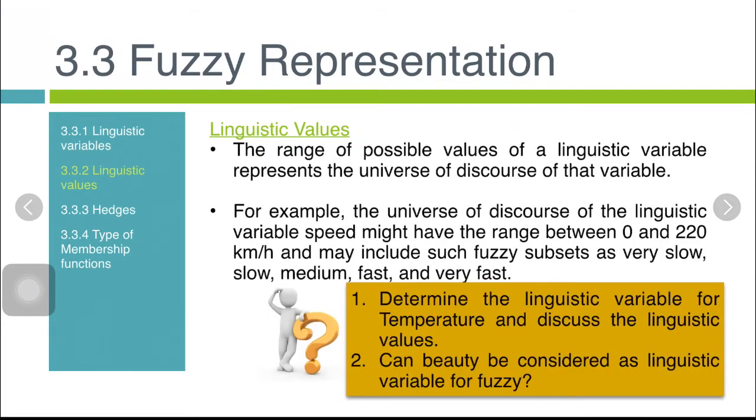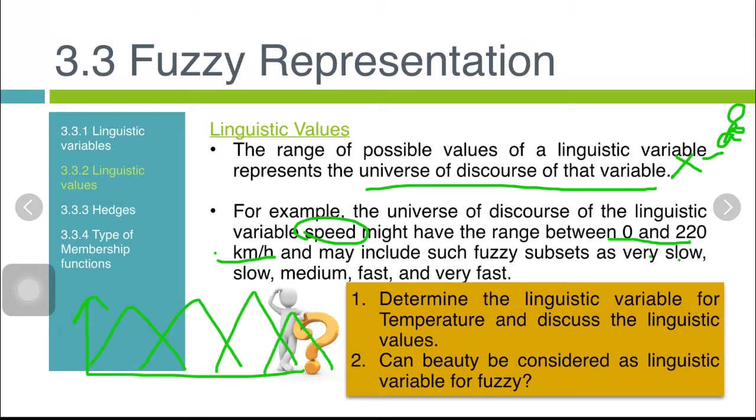The range of possible values of linguistic variables represents the universe of discourse of that variable, the x-axis. For example, the universe of the linguistic variable speed may have a range between 0 and 220 kilometers per hour and may include fuzzy subsets such as very slow, slow, medium, fast, and very fast. These fuzzy subsets actually represent the linguistic values.